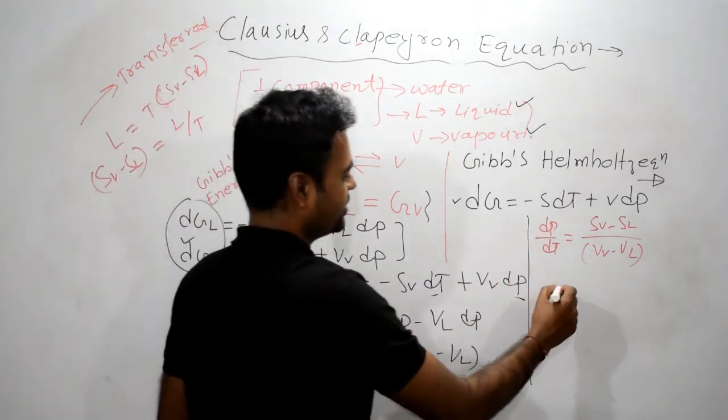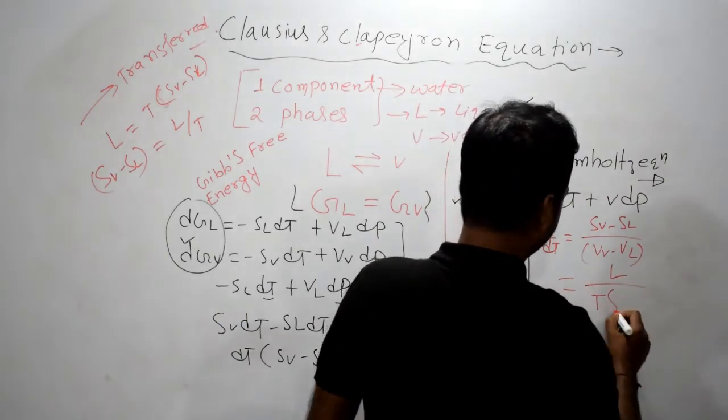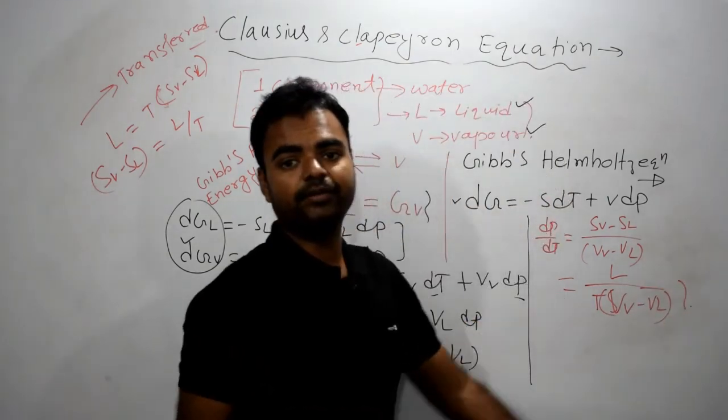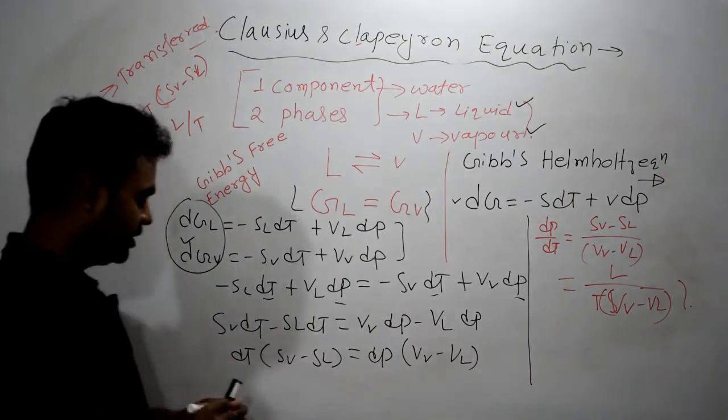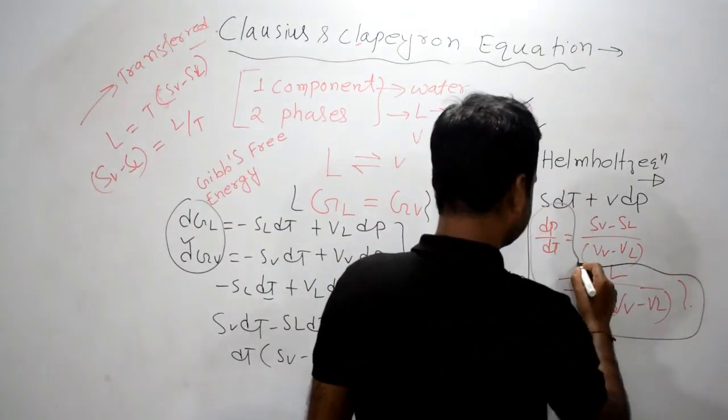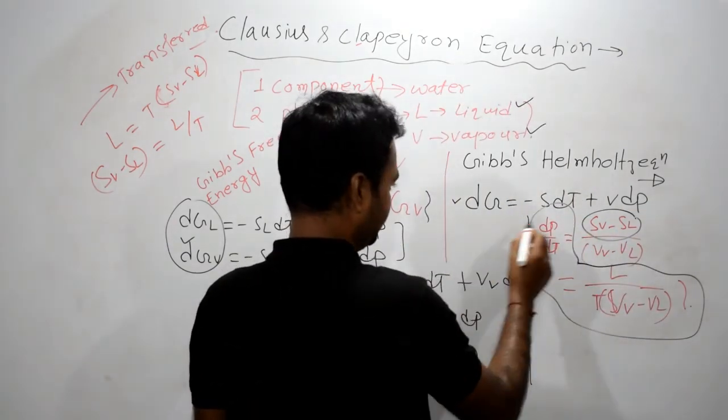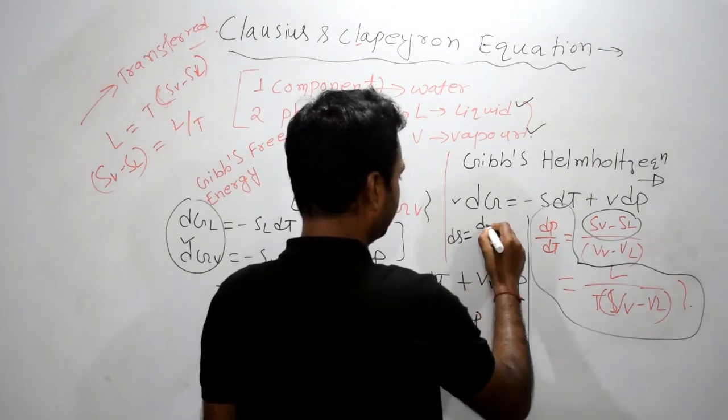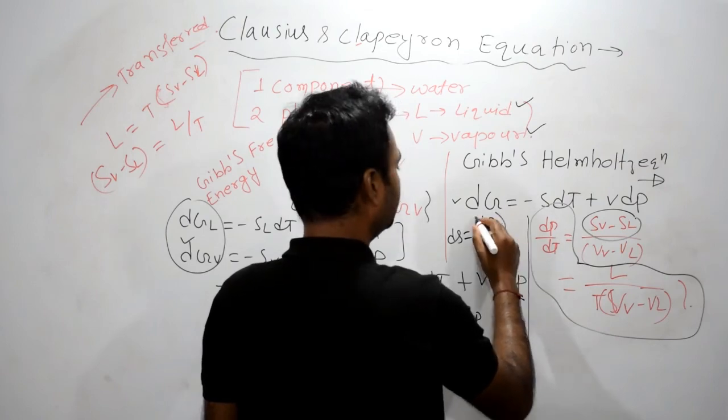So in the place of SV minus SL what we can write is L/T, giving us dP/dT equals L divided by T(VV minus VL). This is widely known worldwide as the Clausius-Clapeyron equation.